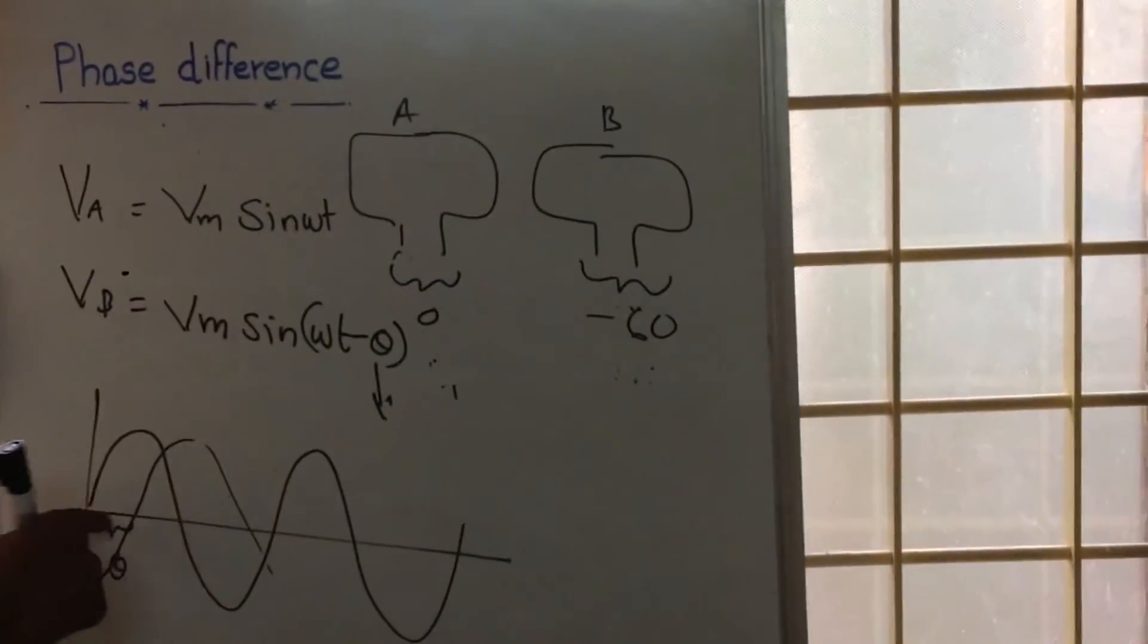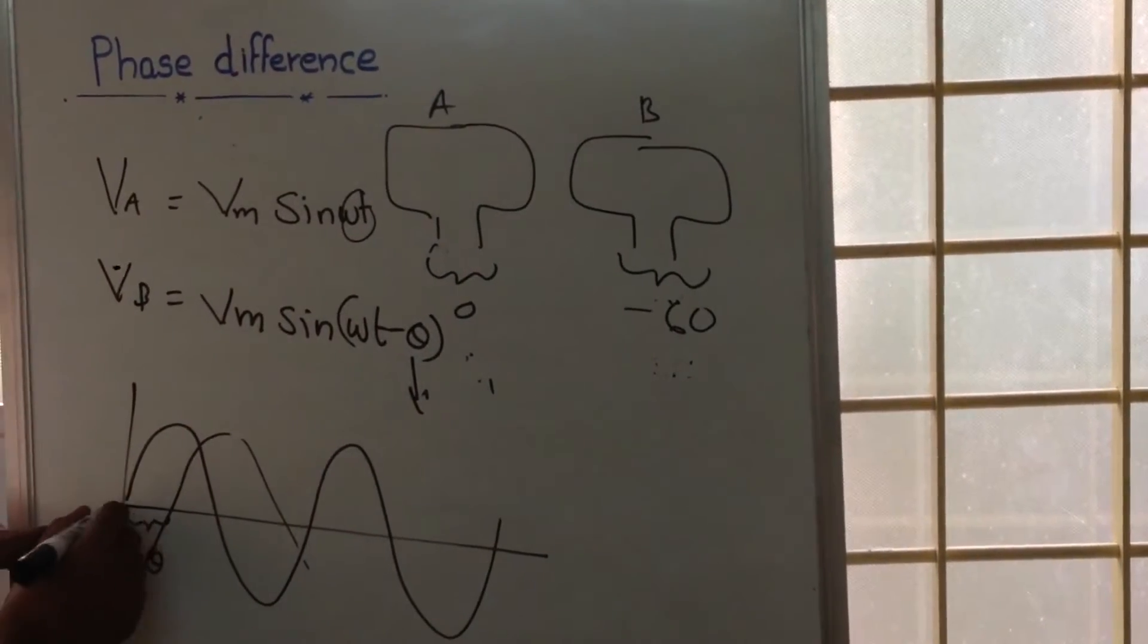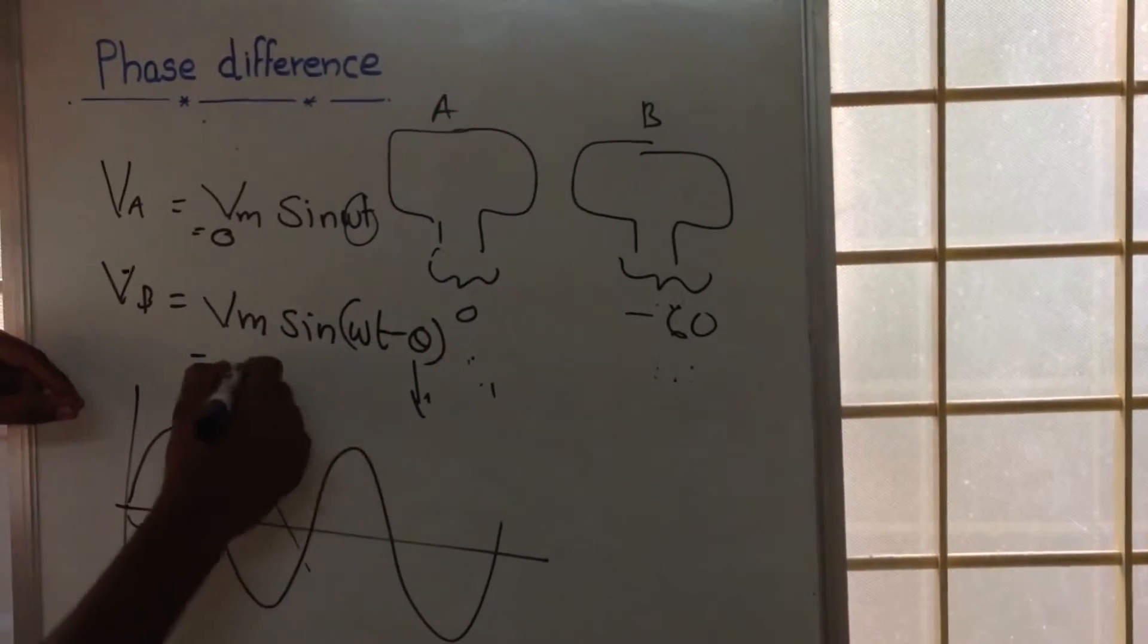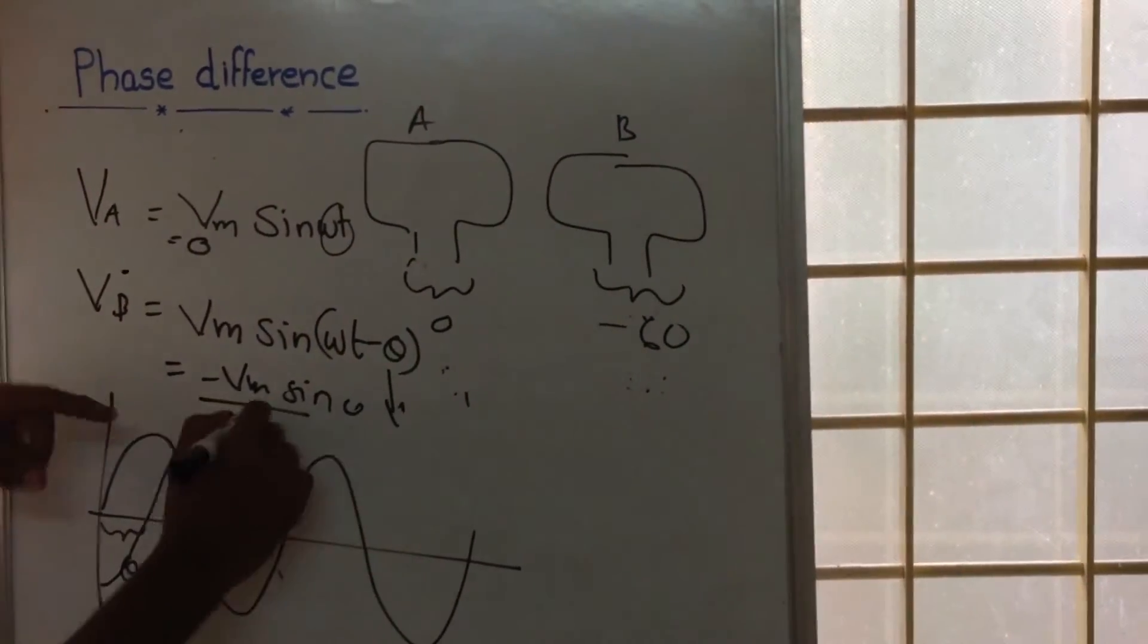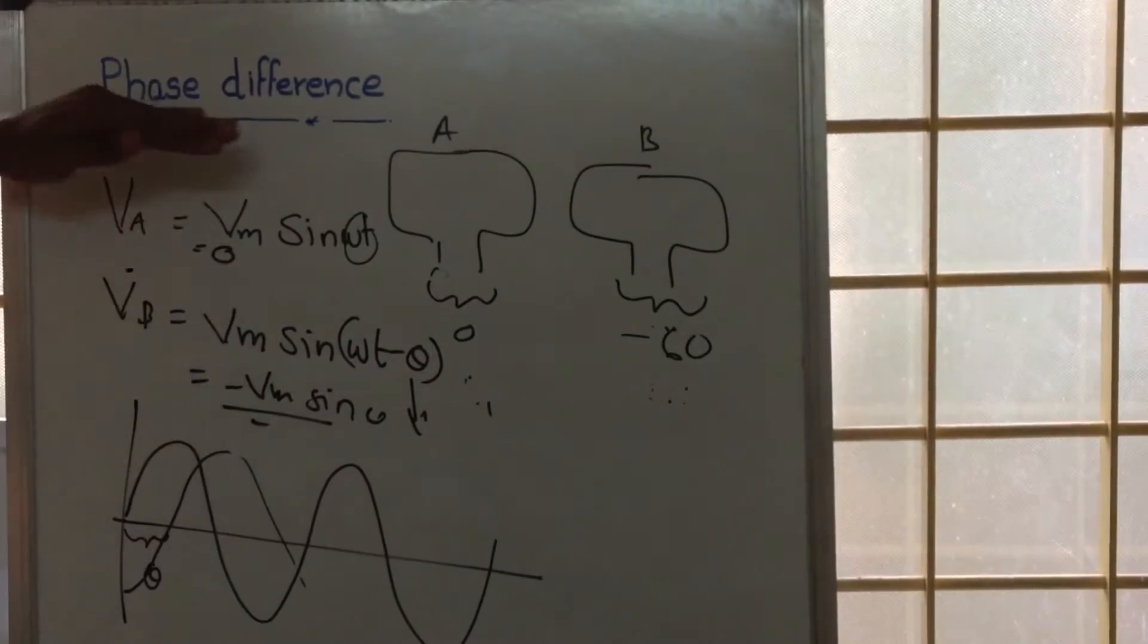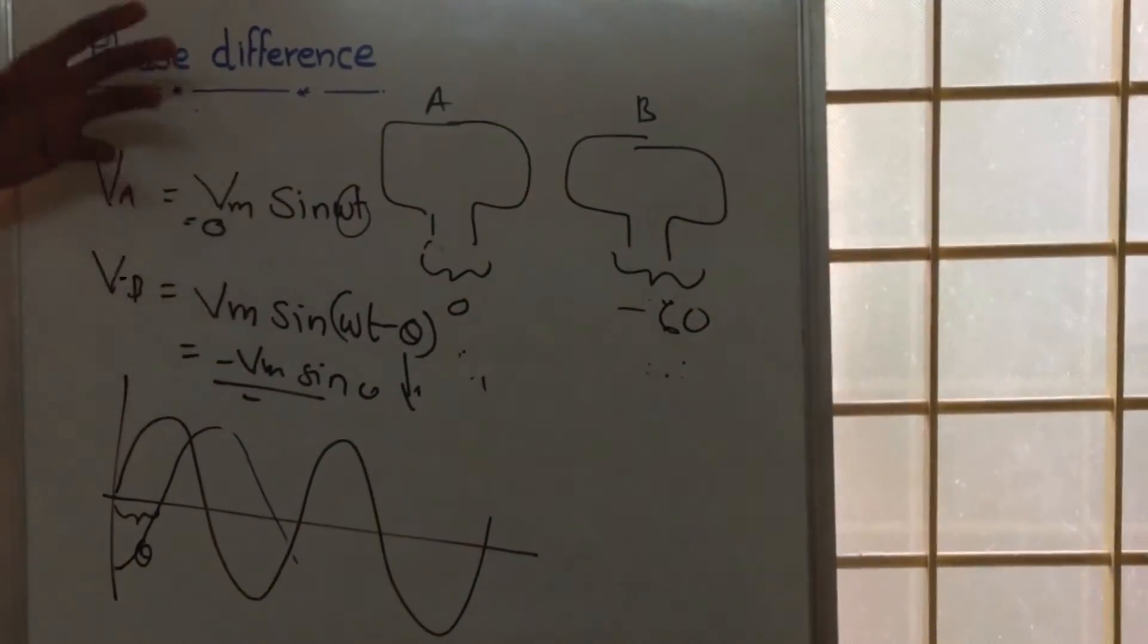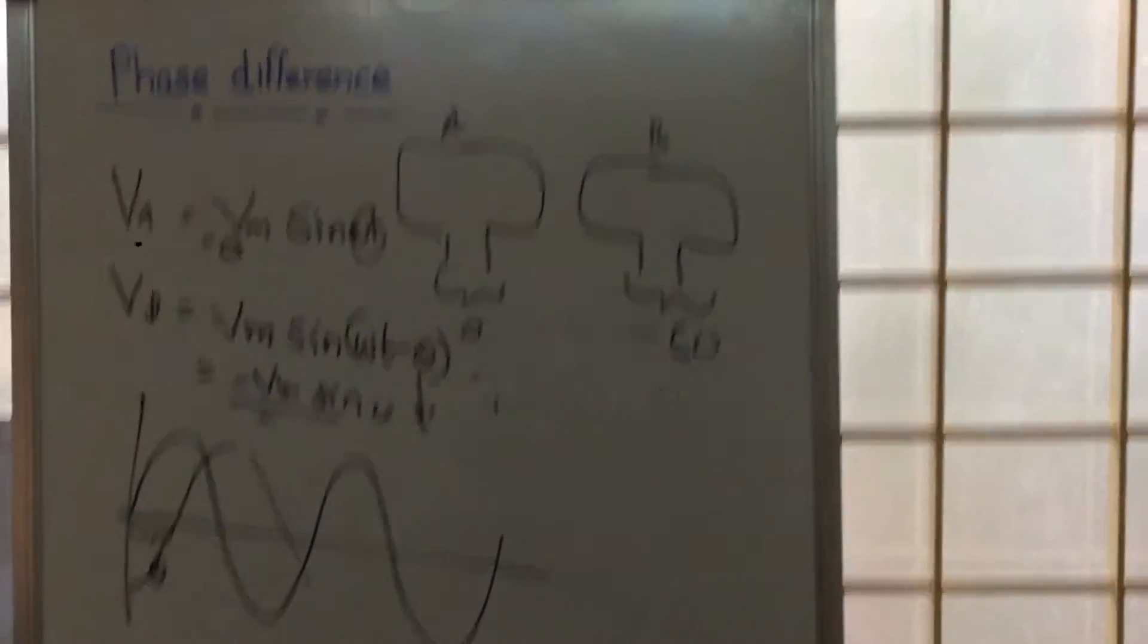At ωt = 0, that is at t = 0, here the value will be 0, but here it will be -Vm sin(θ). That means this VB will be a negative quantity so that the graph goes to the negative side of the y-axis. So phase difference means it is the angle by which a particular alternating quantity differs from another.